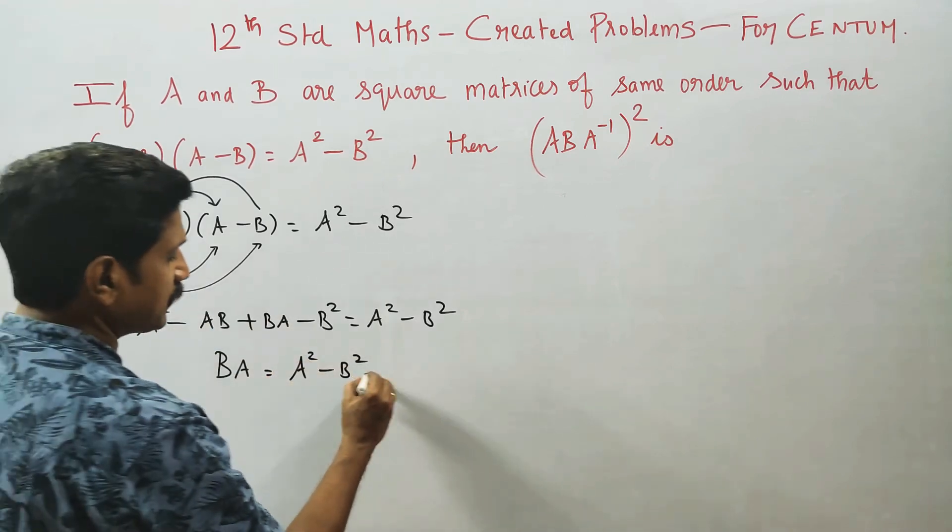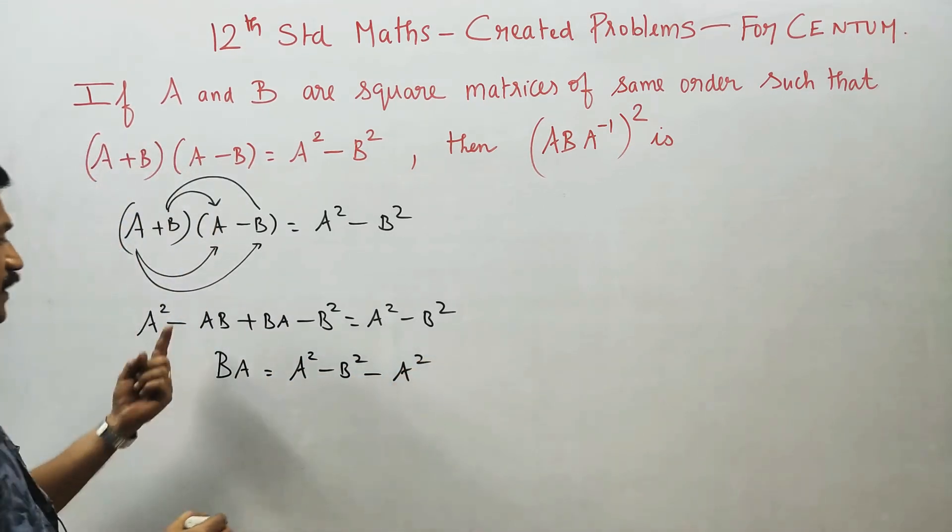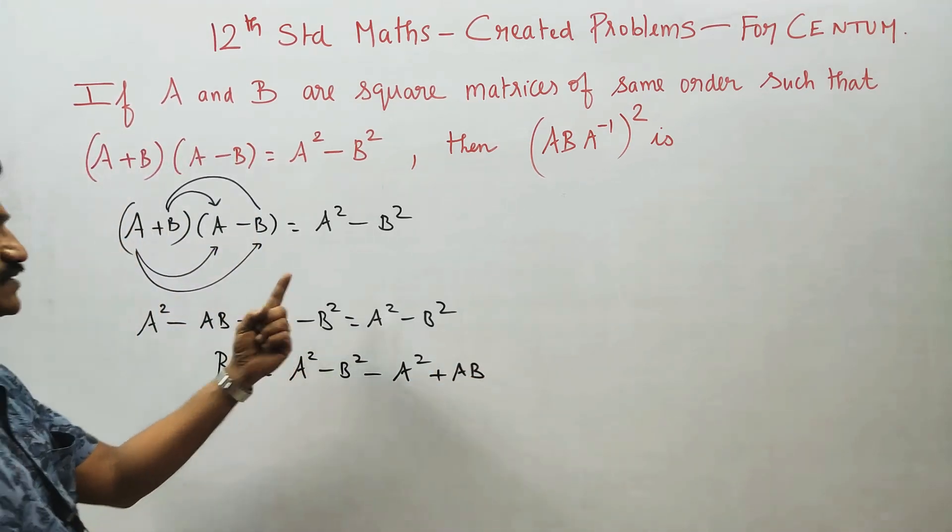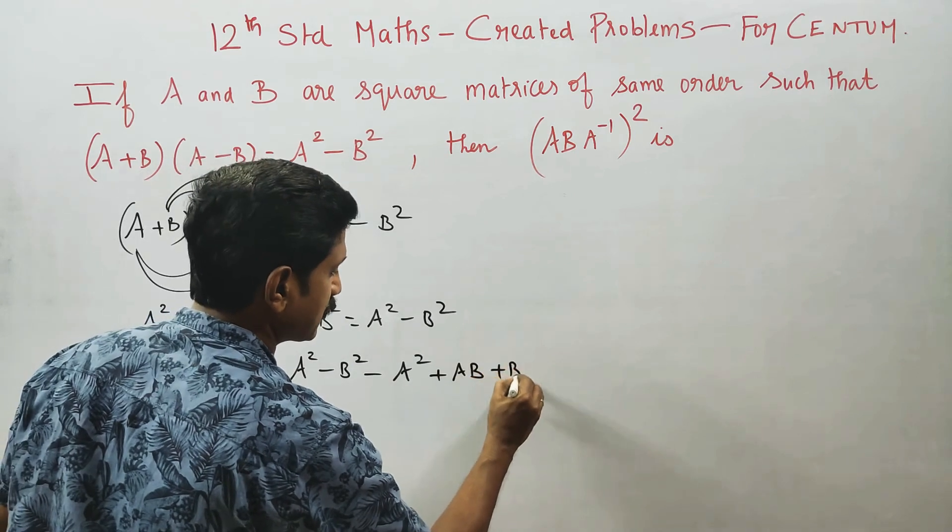Plus A square is equal to A square minus A square. Minus AB is equal to A square minus B square. Minus B square is equal to B square.